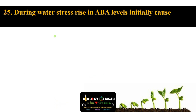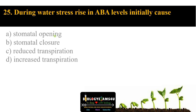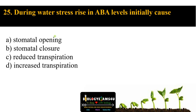Final question, number twenty-five: during water stress, a rise in ABA levels initially causes option A stomatal opening, option B stomatal closure, option C reduced transpiration, option D increased transpiration. The answer is stomatal closure. ABA is also called the stress hormone; during drought or water stress, it closes the stomata to prevent further water loss by transpiration.